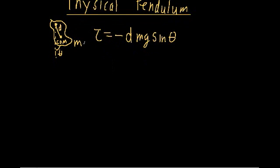Now let's plug that into Newton's second law: torque is equal to moment of inertia times angular acceleration. Now for different physical pendulums, we're going to have different values of our moment of inertia. Typically the hard part of this problem is going to be trying to figure out what this moment of inertia actually is. But for this general case, we're just going to say it has a generic moment of inertia, I-naught.